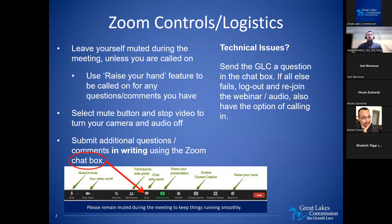Before we get started, we'd like to go through some Zoom controls and logistics. Please leave yourself muted during the meeting unless you're called on, and you can use the raise your hand feature for questions or comments. Select the mute button and stop video to turn your camera and audio off. You can submit additional questions in the Zoom chat box, enable closed captions by clicking the closed caption button, and if you have technical issues, send the GLC a question in the chat. If all else fails, you can log out and rejoin, or call in.